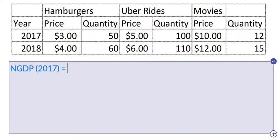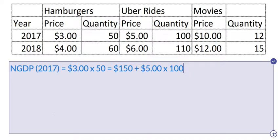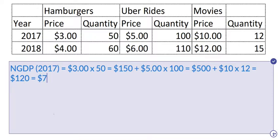Essentially, nominal GDP is the price times the quantity of each of the goods produced in that year. Starting with burgers: $3 times 50 burgers equals $150. Then we add the Uber rides: $5 times 100 Uber rides equals $500. Then we add the movies: $10 times 12 equals $120. Adding these up: $150 plus $500 is $650, plus $120, equals $770.